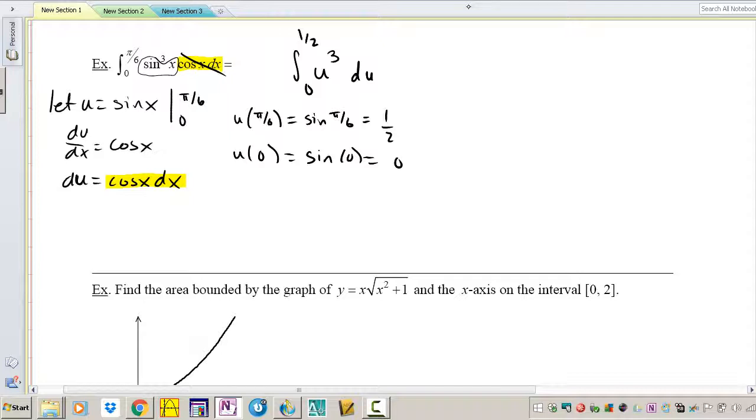So that means my limits of integration is 0 to 1 half. Let's go ahead and use our integration rules here. So u to the fourth, this really isn't a trick problem anymore, so it's just u to the fourth over 4 from 0 to 1 half.